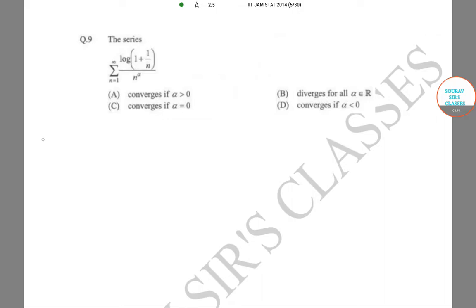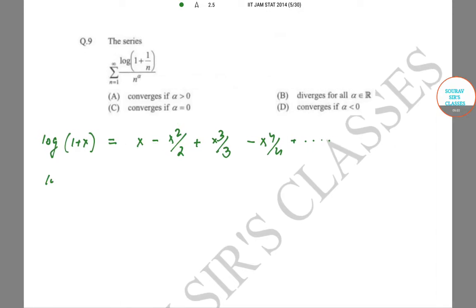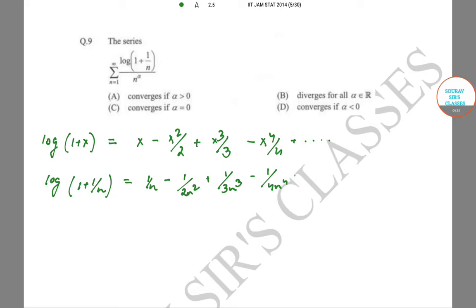For this, we use the Taylor series: log(1+x) = x − x²/2 + x³/3 − x⁴/4 + … So log(1 + 1/n) = 1/n − 1/(2n²) + 1/(3n³) − 1/(4n⁴) + …